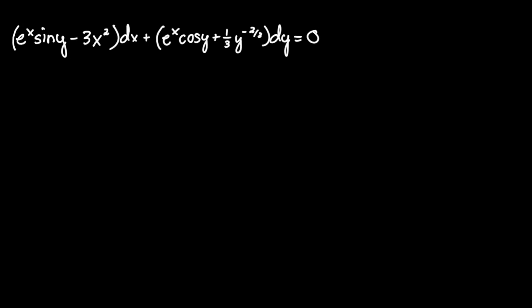Find the general solution of the equation: e to the x sine y minus 3x squared dx, plus e to the x cosine y plus one-third y to the power of negative two-thirds dy equals zero.